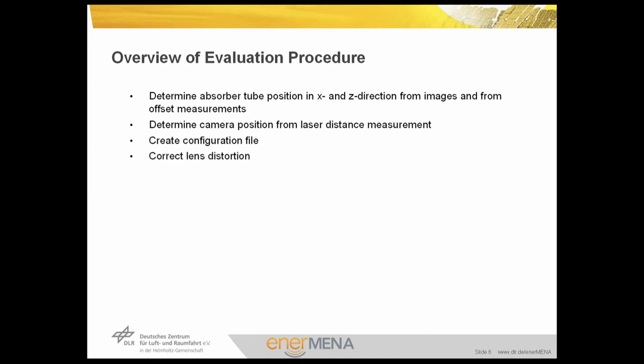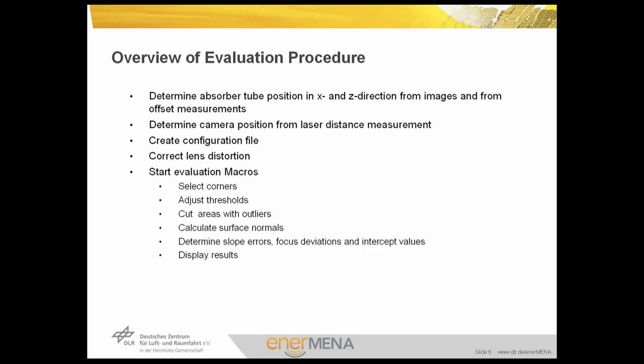When the evaluation starts, the lens distortion and its influence on the images is corrected. Some manual input is required during the evaluation — the user has to select the corners of the modules and adjust the thresholds. It is not possible for the rest of the evaluation to be completely automatic, because disturbing areas in the image will cause outliers, and these areas have to be cut manually. After rejecting all outliers, the software calculates the surface normals and determines slope errors by comparing them with the design values.